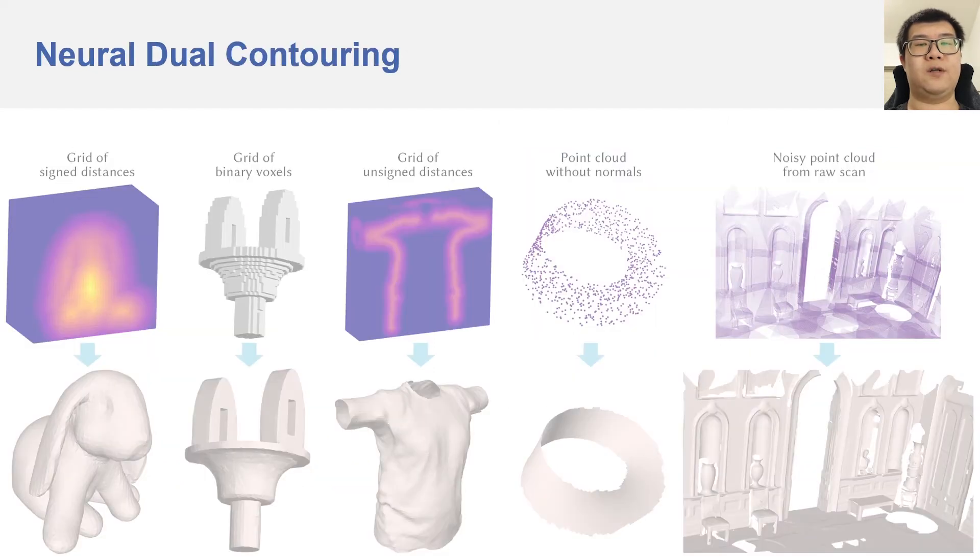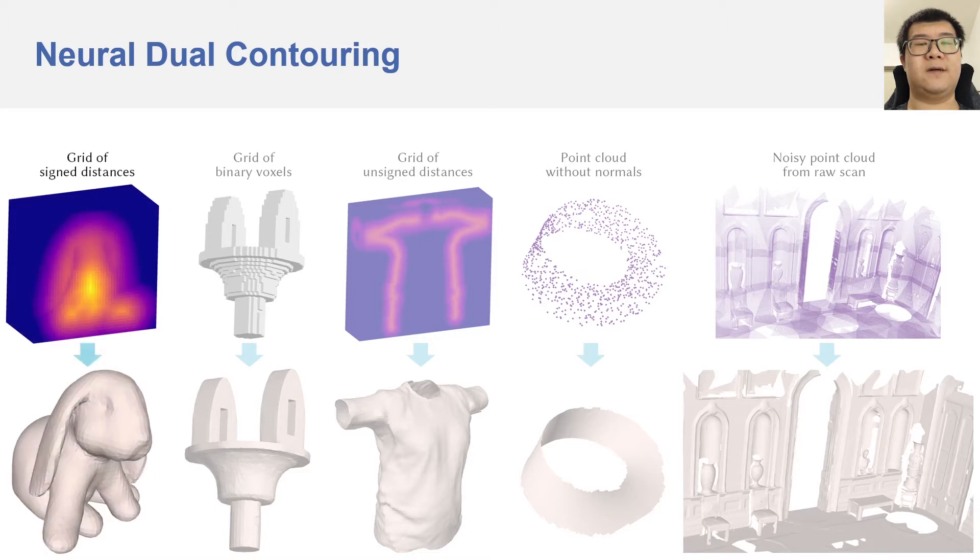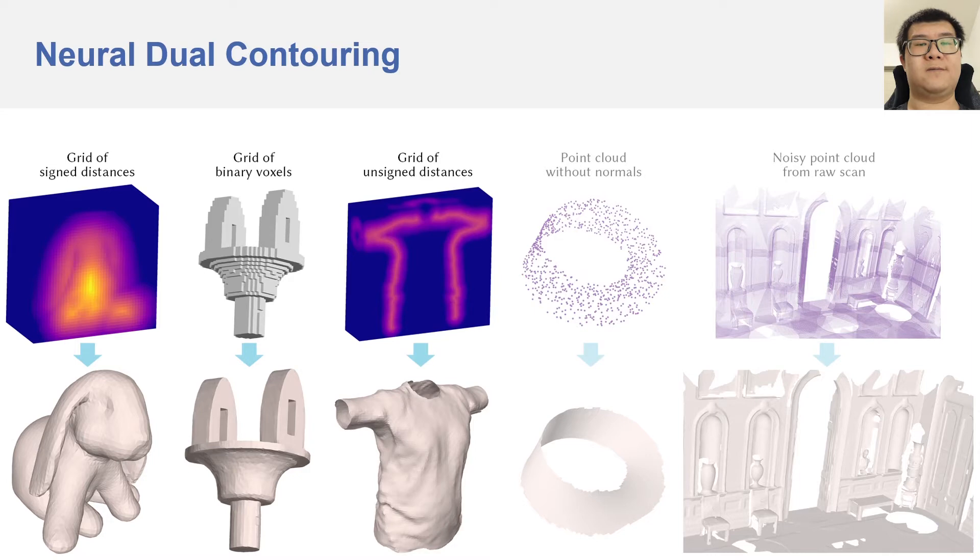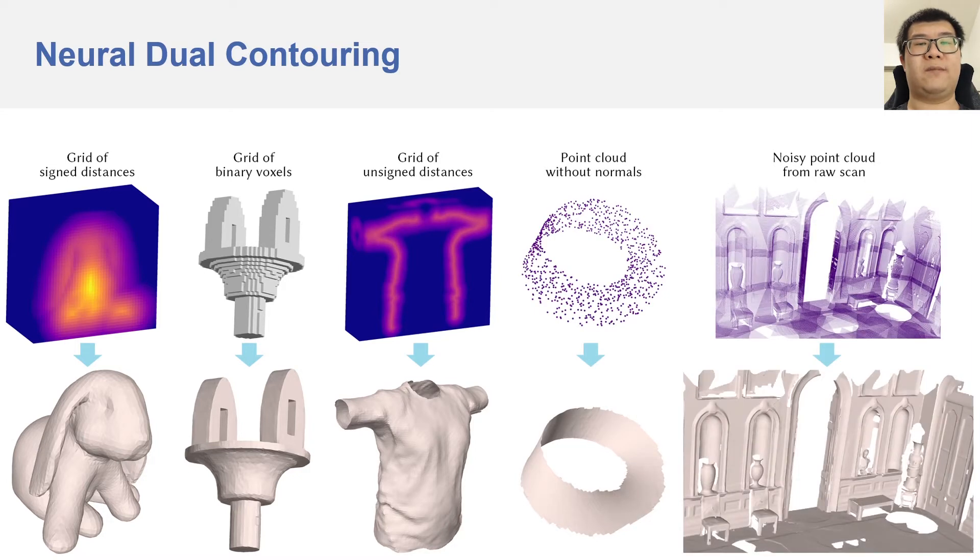Our method, Neural Dual Contouring, is a unified data-driven approach that learns to construct meshes from a majority of inputs, such as grids of signed distances, grids of binary voxels, point clouds without normals, and noisy point clouds from raw scan data.